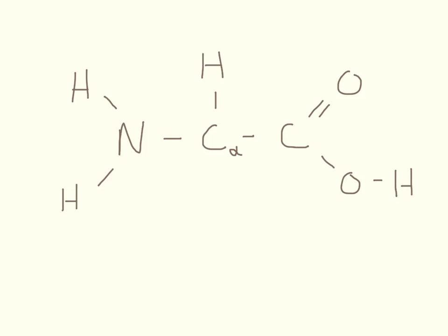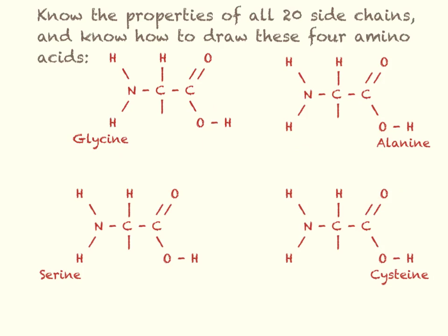Down below is really the only question mark. This is called a side chain. So for each of the 20 amino acids, everything is pretty much the same except the side chain changes.